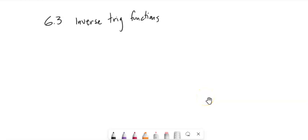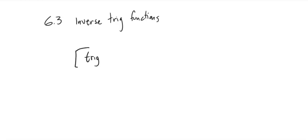Let's talk about inverse trig functions, section 6.3 for Math 142. On this section, we're going to talk about how to undo these trig functions. Trig functions — sine, cosine, tangent, cosecant — take in an angle and spit out a ratio.